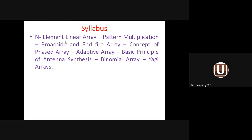For high frequency applications, we need to increase gain and directivity, so we go for an antenna array. Two or more similar elements put together is called an antenna array. We have four types: broadside array, end-fire array, collinear array, and parasitic array. The topic of parasitic array was seen yesterday — example is the Yagi-Uda antenna.